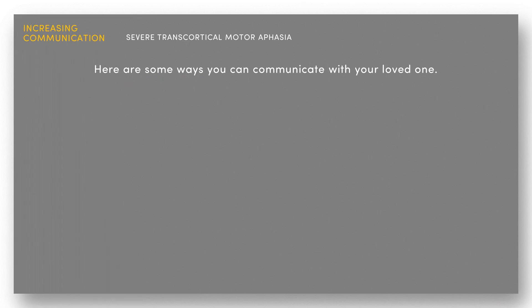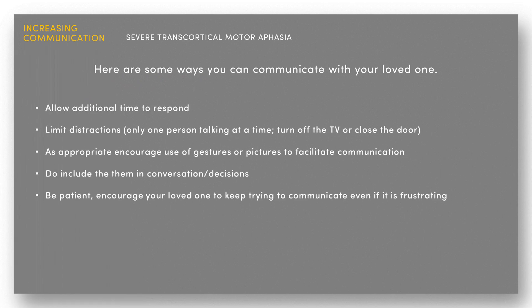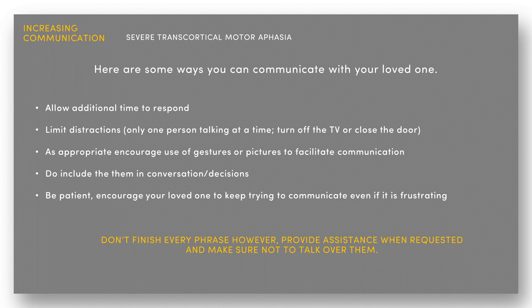Some things you can do to help your loved one with aphasia: Allow additional time to respond. Limit distractions — only one person talking at a time, and make sure to turn off the TV or close the door. As appropriate, encourage the use of gestures or pictures to help facilitate communication. Do include the person with aphasia in conversations and decisions. Be patient. Encourage your loved one to keep trying to communicate even if it's frustrating. Don't jump in and finish every phrase for them; however, provide assistance when requested. Make sure not to talk over them. It is anticipated that communication will improve over time as you learn how to most effectively interact with them.